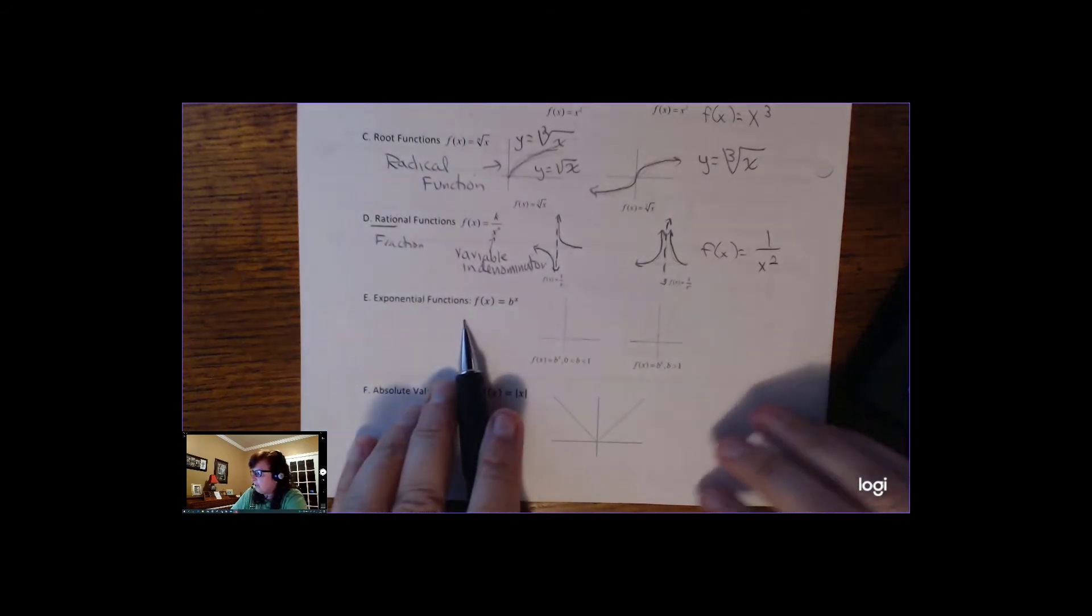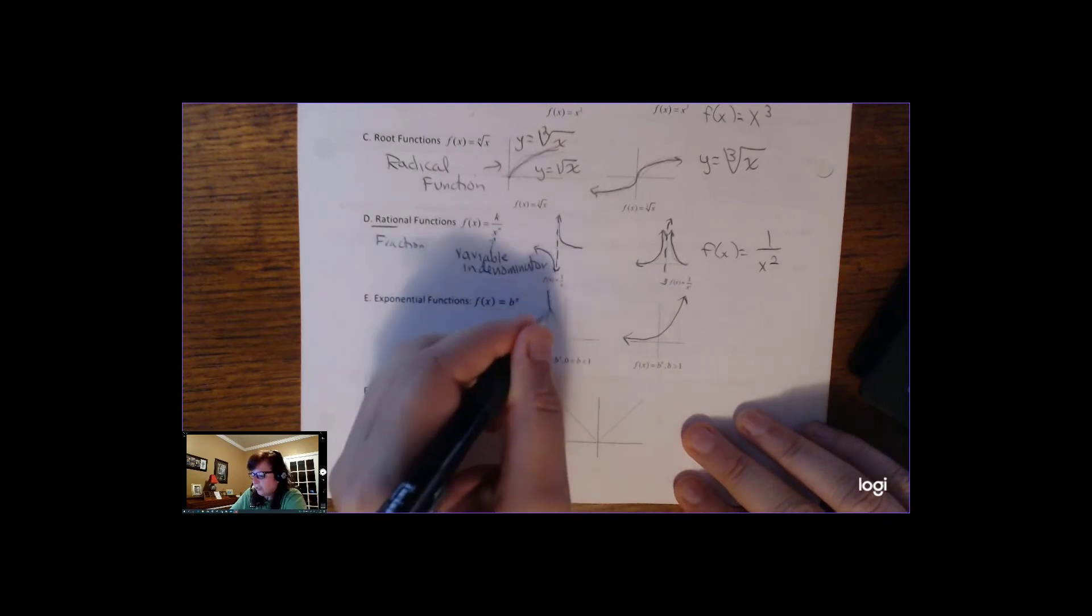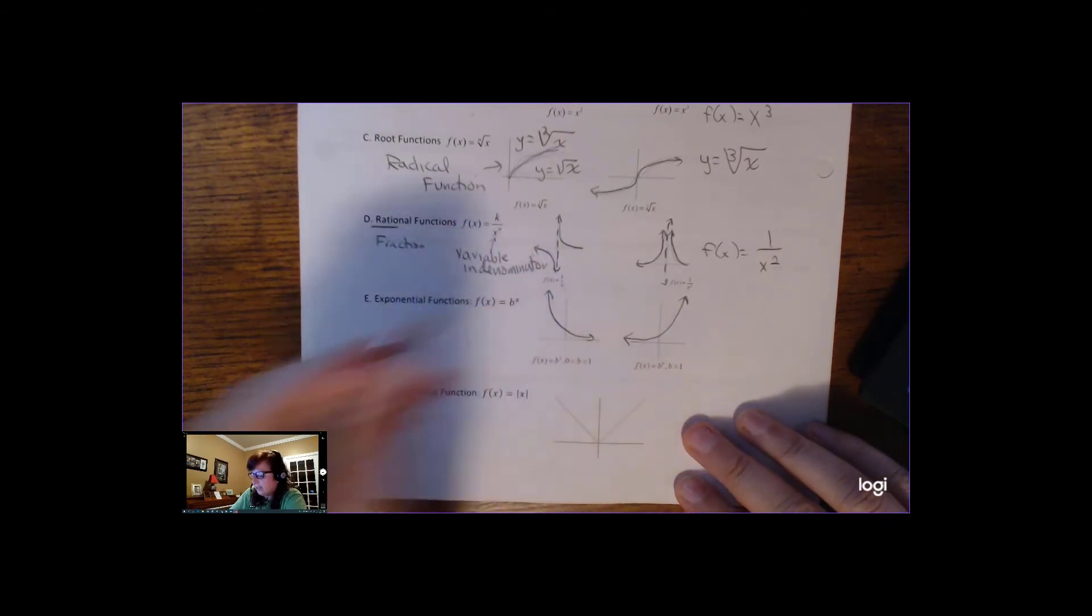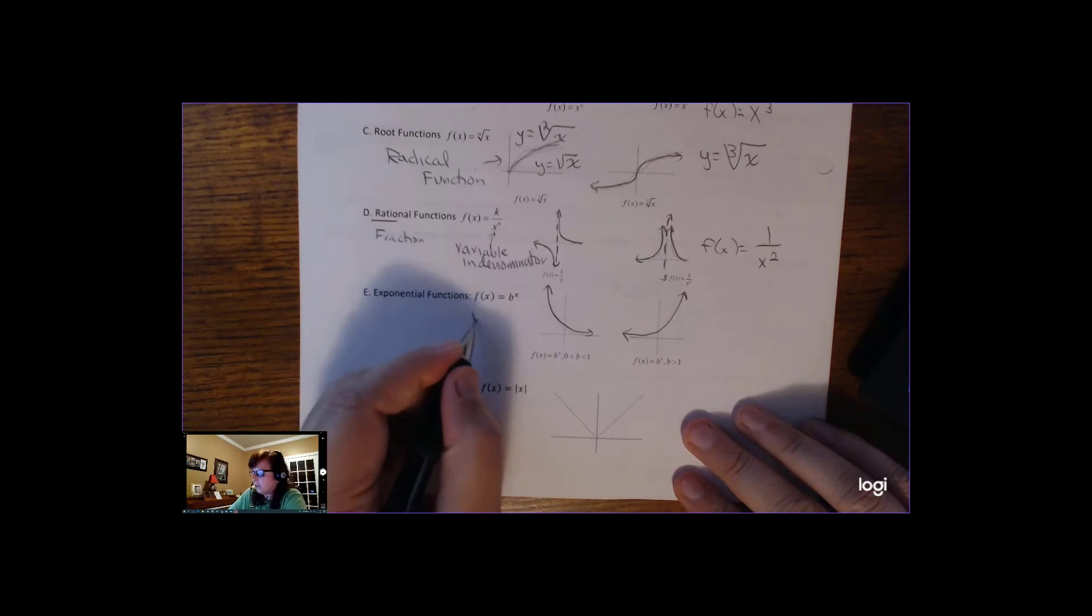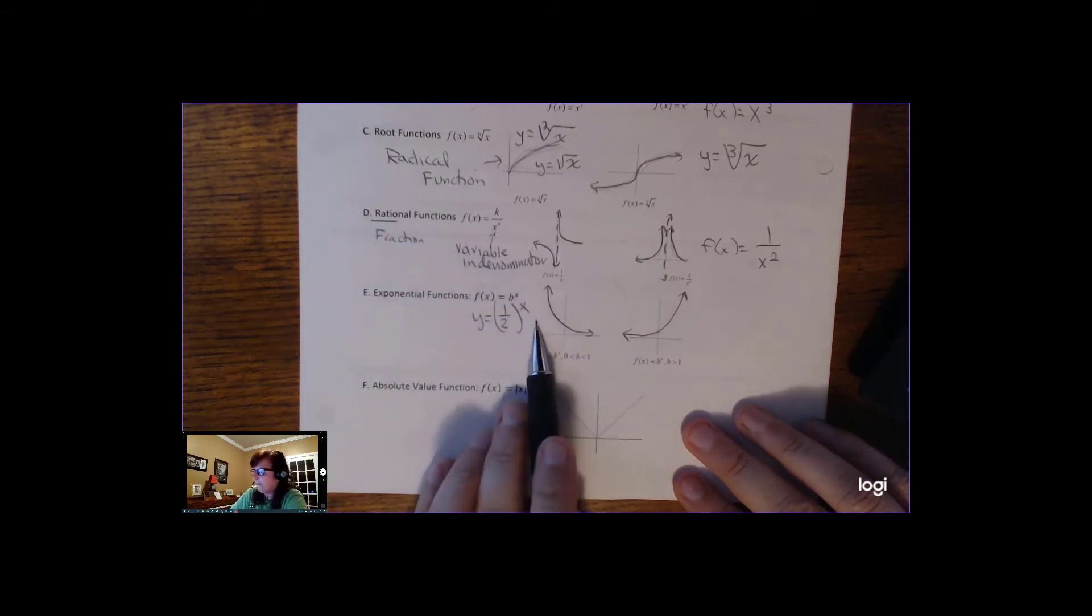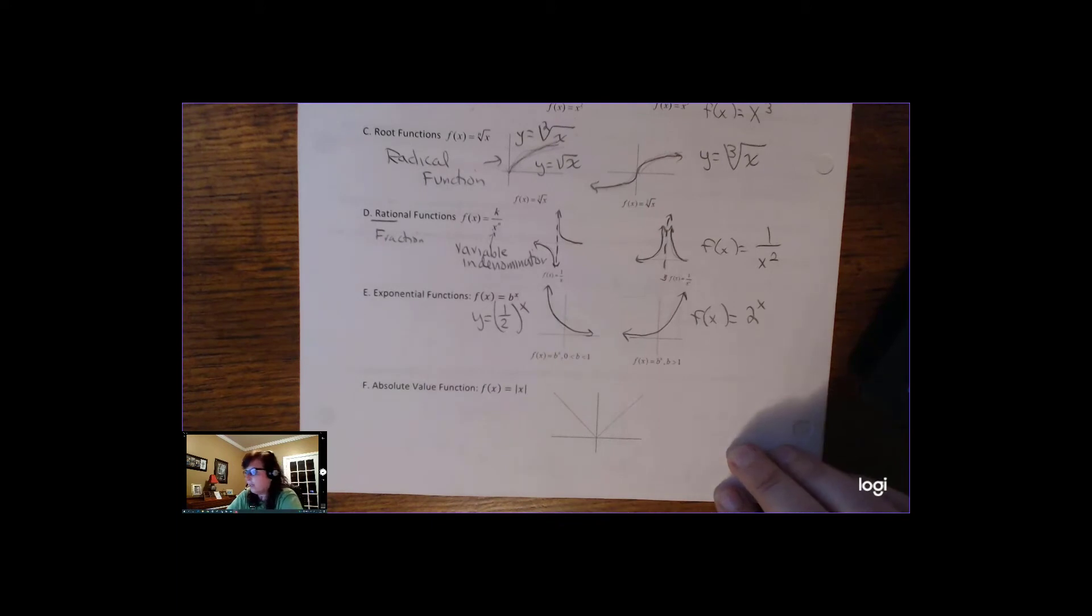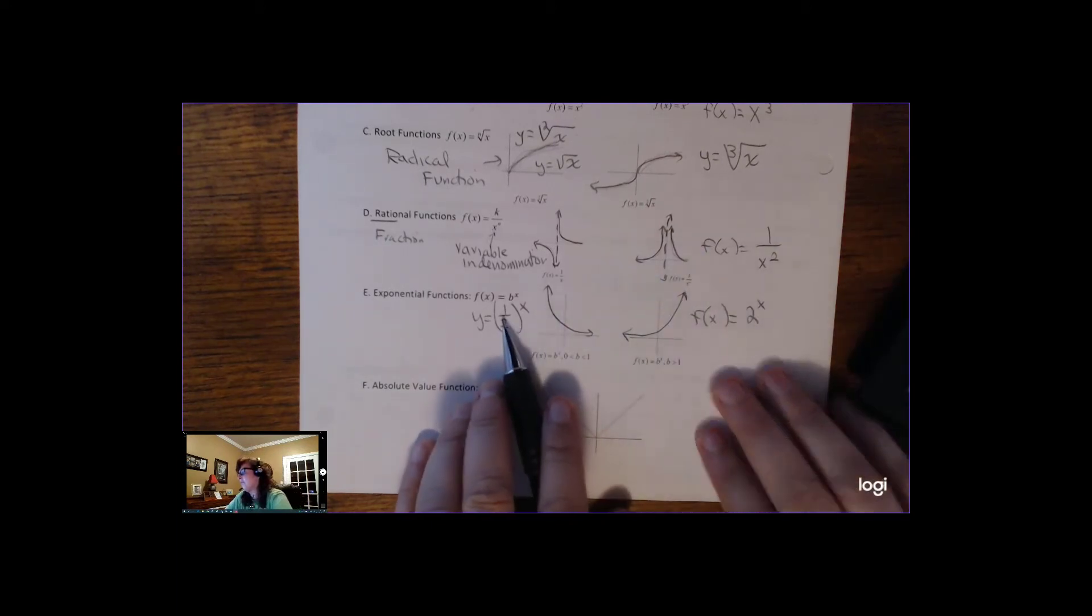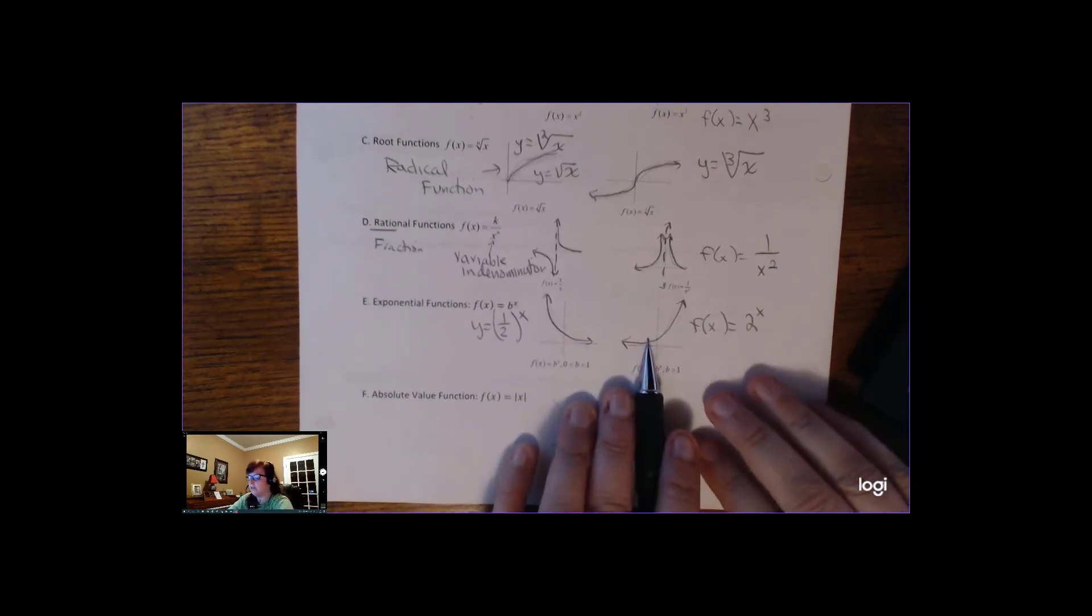Exponential functions, they look like j's or backwards j's, like that. And an exponential function has a number to a variable power. So like this is a decaying function. This would be like y equals 1 half to the x power. And this is increasing, so maybe something is doubling every day. It'd be like y equals 2 to the x. You just need to know the shapes. You don't need to know the functions, but just FYI. So backwards j's or j's are exponential functions.